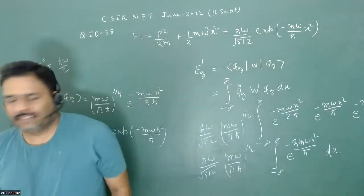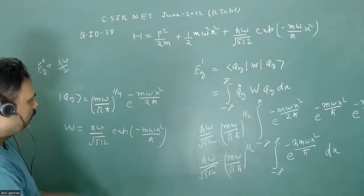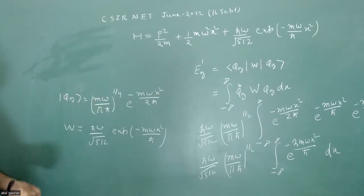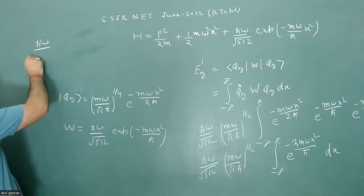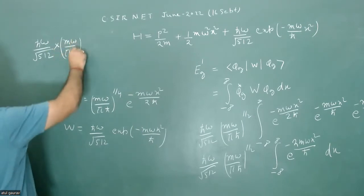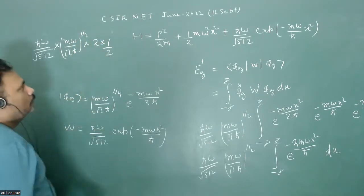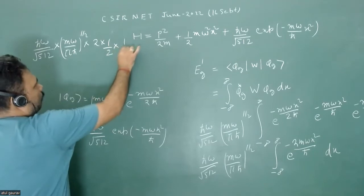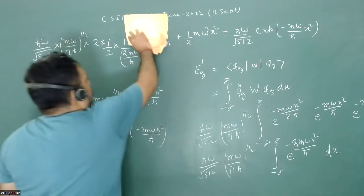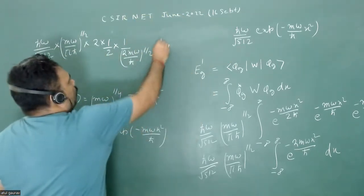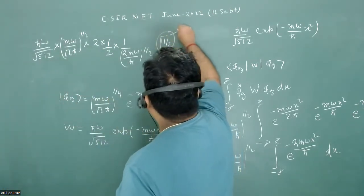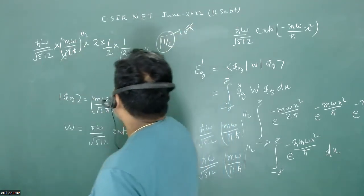The resulting integral is a standard Gaussian. The full expression is h-bar omega over root 512 times (m omega / π h-bar)^(1/2) times the integral. Using the Gamma function approach: the integral evaluates using Γ(1/2) = √π, and the √π and π terms cancel out.